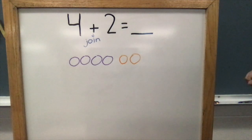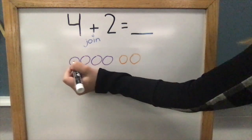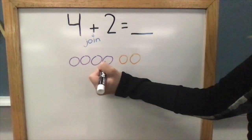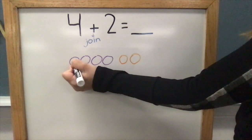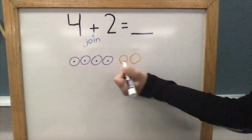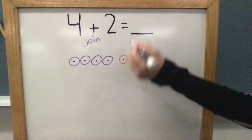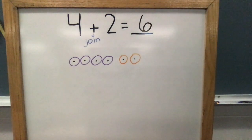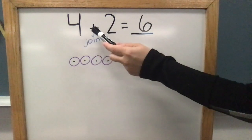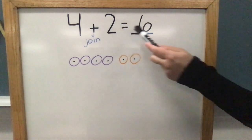The last step is to figure out how many in all. To do this, I'll count all of the counters. If I make a dot on each one, it will help me keep track of which ones I have already counted. One, two, three, four, five, six. There are six counters in all. So, four plus two equals six.